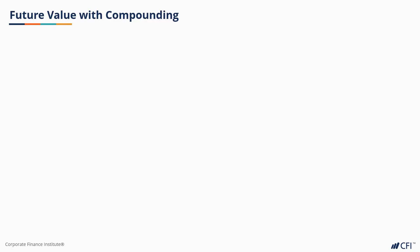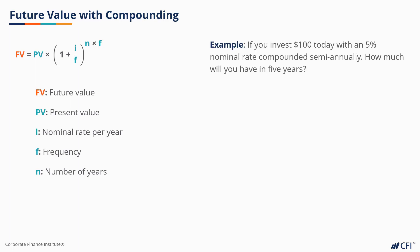We now revisit the future value formula, but this time with compounding. We also consider that compounding may not be annual, so we introduce an adjustment for the frequency of compounding, F. FV is now defined as PV multiplied by (1 + i/F)^(N×F), where PV is the present value, i is the nominal rate of interest, F is the frequency of compounding, and N is the number of years. As an example, if you invest $100 today with a 5% interest rate per year compounded semi-annually, how much will you have in 5 years?